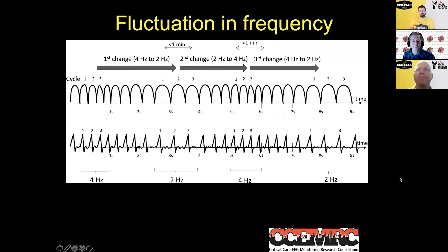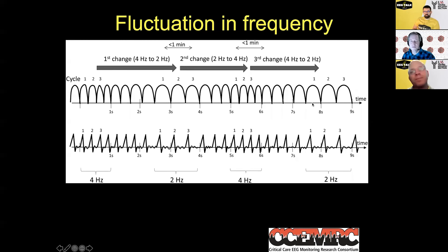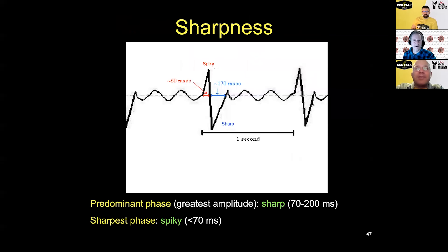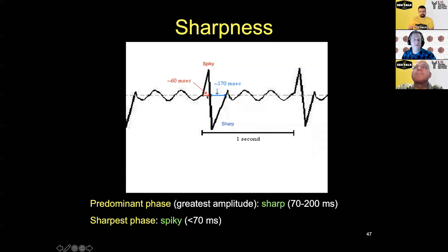For fluctuating: a pattern can't qualify as evolving, but it goes back and forth — at least three changes in those same three parameters, each change less than a minute apart. For example, going from 4 Hz to 2 Hz, back to 4 Hz, back to 2 Hz — that back-and-forth pattern is fluctuating.